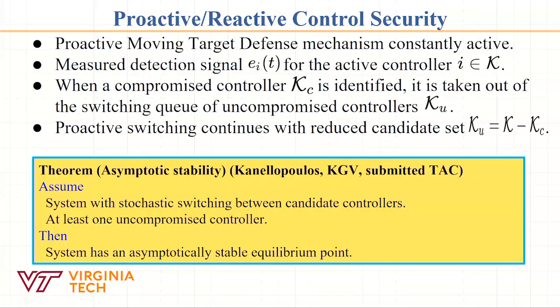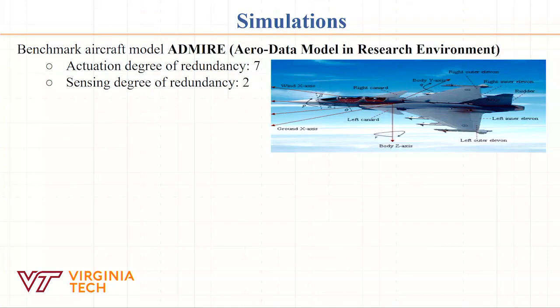Everything we have is proven to have an asymptotically stable equilibrium point, which is very important for the controls people. We applied this to a benchmark aircraft problem called ADMIRE, which has redundancy by design: an actuation degree of redundancy of seven and a sensing degree of redundancy of two.